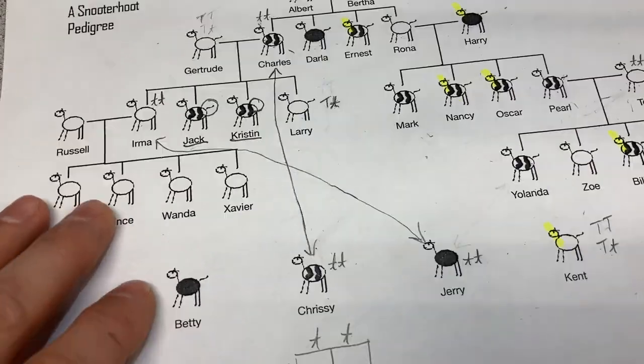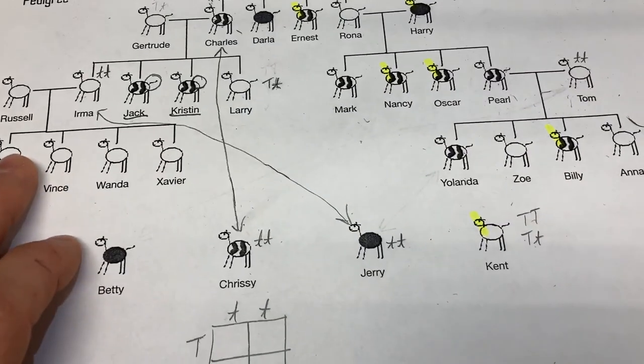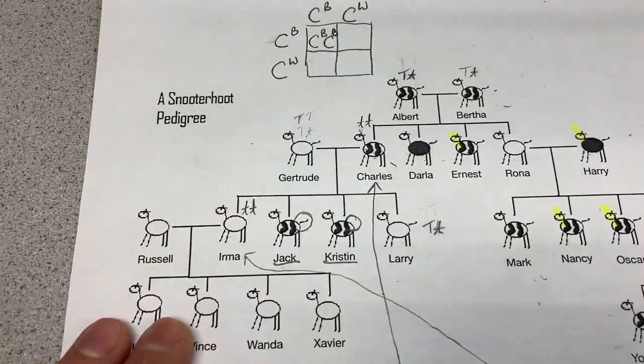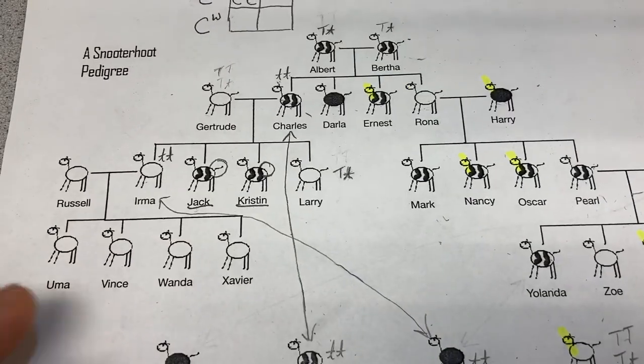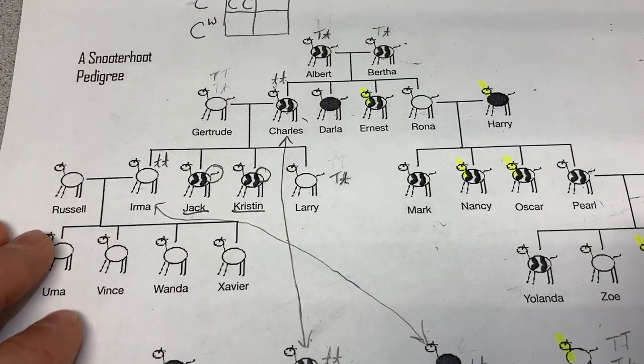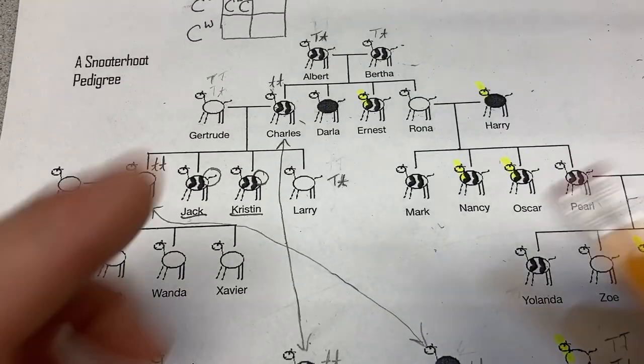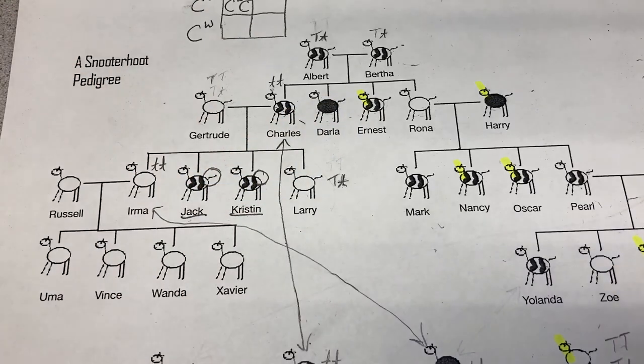These other individuals aren't part of the pedigree generations — they're just some other individuals we want to cross to see what would happen. Hopefully that helps you out. Print that paper out — it will make the whole situation a whole lot simpler.